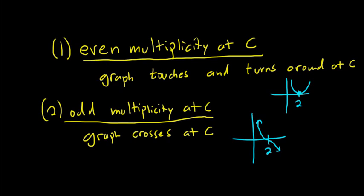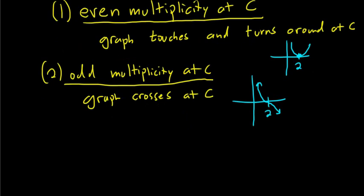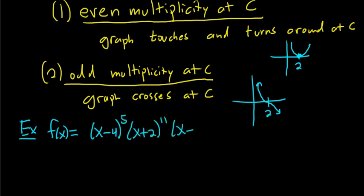Okay, so let's do some examples where we find the zeros and determine whether the graph touches and turns around or whether it crosses. So EX means example. So how about f(x) equals (x-4) to the 5th, (x+2) to the 11th, (x-1). And so the question is to find the zeros and determine whether it touches and turns around at the zero or crosses at the zero.